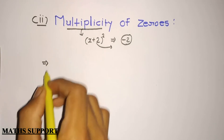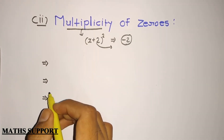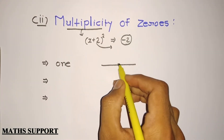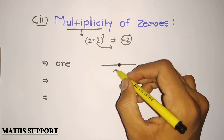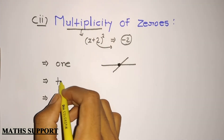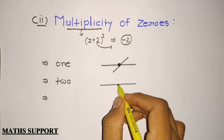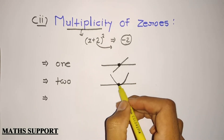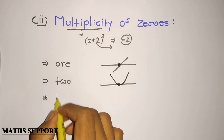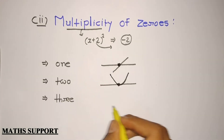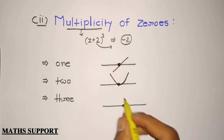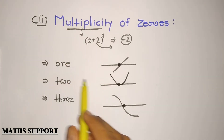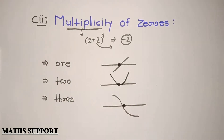There are three kinds of multiplicity. If your multiplicity is one, then your graph will pass like a straight line. If your multiplicity is two and your root is at a point, then your graph will pass like a parabola — an upward parabola. And if your multiplicity is three, then your graph will pass like a cubic curve. You need to remember how your multiplicity determines how the graph behaves at each root.